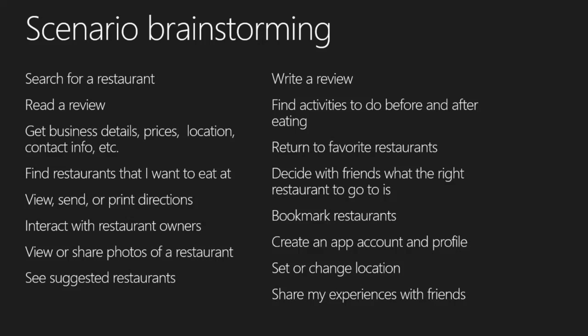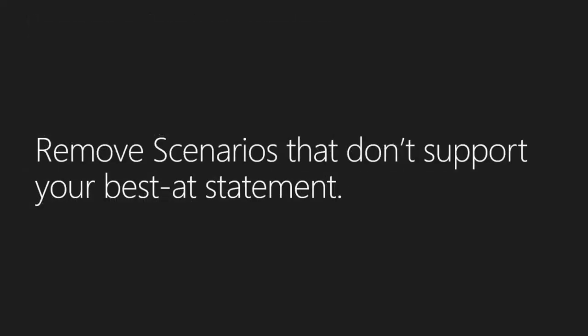Here you can see the results of brainstorming possible scenarios for the Food and Friends app. Don't restrict yourself at this stage — think of every possibility. We'll then go through the filtering aspect afterwards. Now that you have a great collection of scenarios, your next step is going to be to remove some of those scenarios that don't support your best at statement. If you have a great scenario that does not align with your best at statement, it may belong in another app. The reason for doing this is to really streamline your design sessions — you're not going to want to be creating designs for 50 different scenarios.